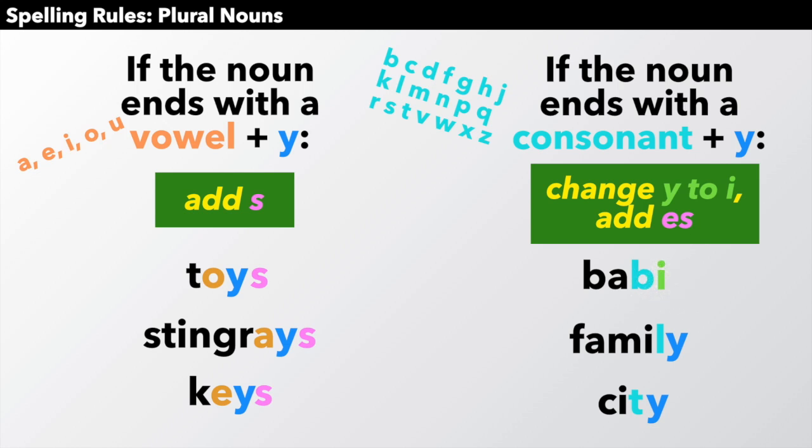Baby. Change that y to i and add es. Babies. B-A-B-I-E-S. Same for family. L is a consonant. Ly changes to L-I-E-S. Families. And same for city. T is a consonant, so we change it to cities. T-I-E-S at the end. Change the y to i.